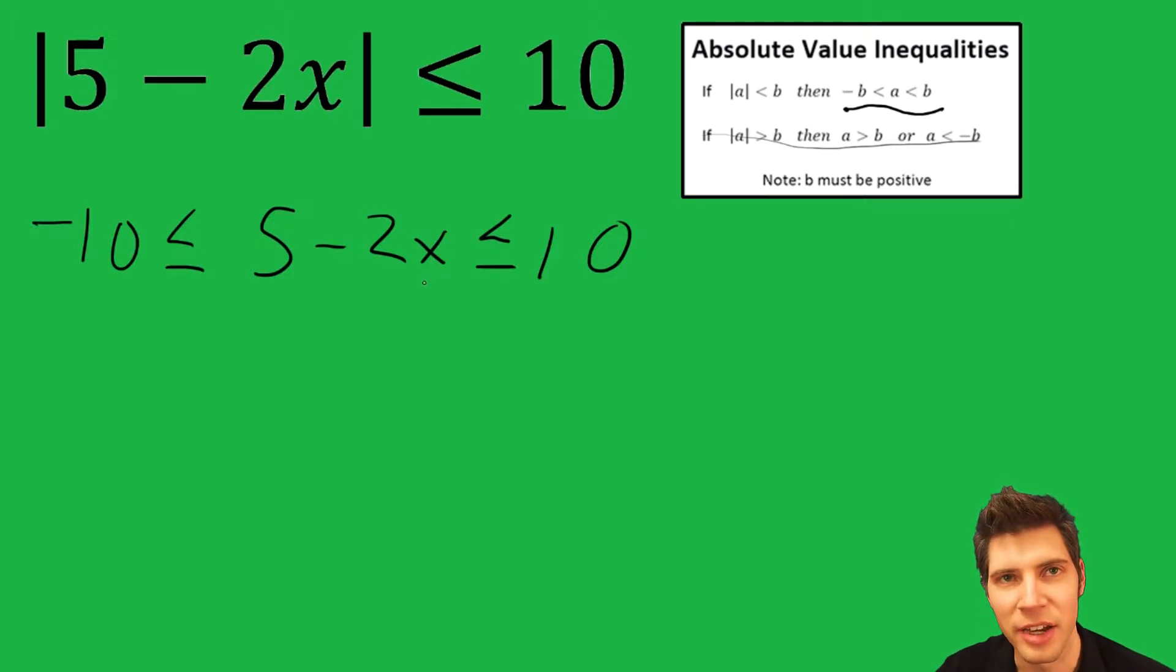Next, we want to isolate the X in the middle. We want to get the X by itself. We're going to subtract 5 from all three of them. Whatever you do in the middle, you have to do to the other two as well. Negative 15, negative 2X, and 5.